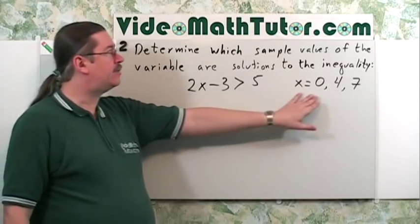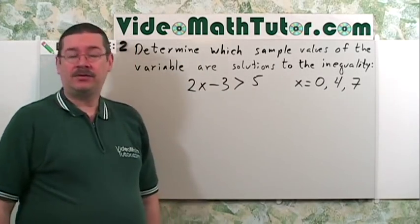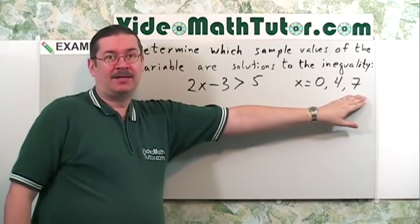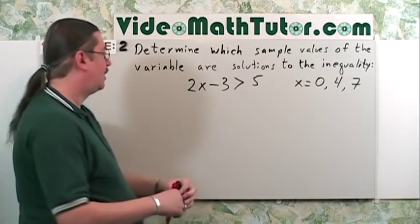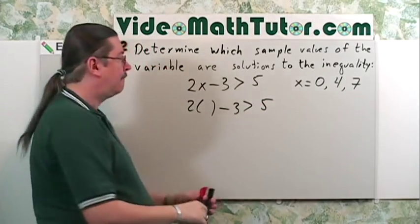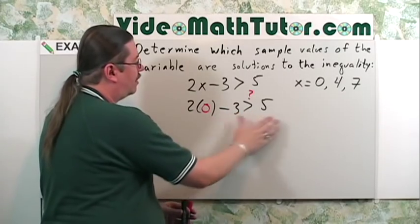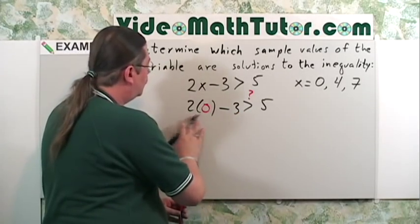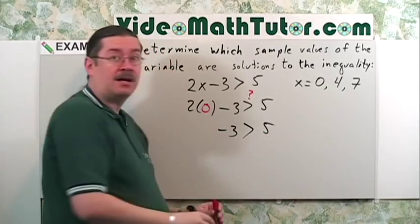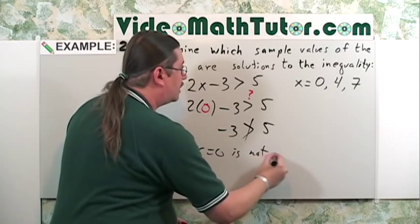Determine which sample values of the variable are solutions to the inequality. All you need to do is replace the x in the inequality with each of these values. Let's do x equals 0 first. We create a template and replace x with 0. 2 times 0 is 0, minus 3 is negative 3. Is that greater than 5? No. So x equals 0 is not a solution.